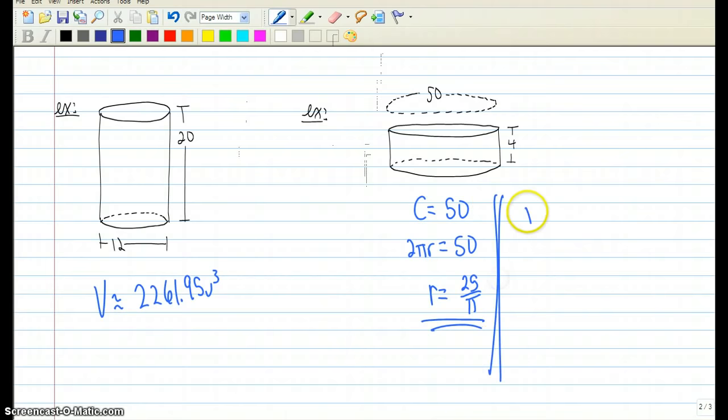So now when we're trying to find the volume, the volume is pi times our radius squared times the height of 4. And if we calculate all of this up, we get an answer of 2,500 over pi, which is approximately 795.77 units cubed.